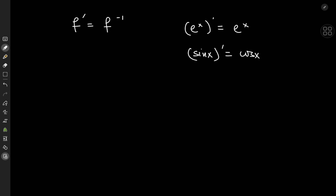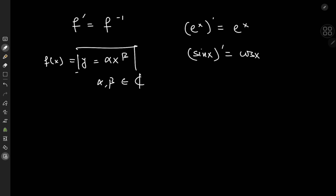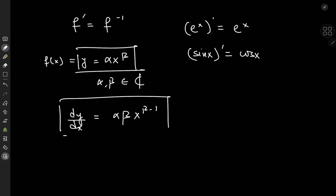So let's try a power function. We'll try f(x) of the form y = α·x^β, where α and β could be complex numbers. This is a very common method of solving differential equations — checking what kind of structure would satisfy the equation. Taking the derivative, we get dy/dx = α·β·x^(β−1).